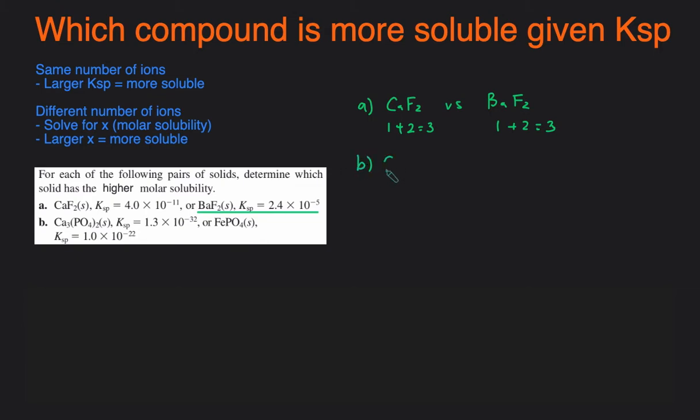For part B, we're comparing calcium phosphate to iron phosphate. The first thing we're going to do is again compare the number of ions. Calcium phosphate will dissociate into three calciums and two phosphates, giving you a total of five ions, whereas iron three phosphate will dissociate into one iron and one phosphate, so that will give you a total of two ions.